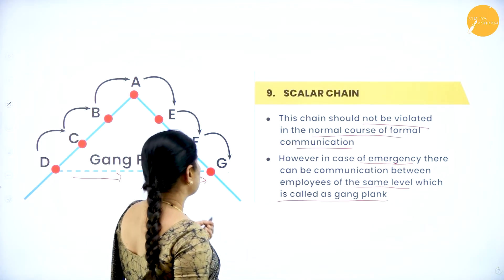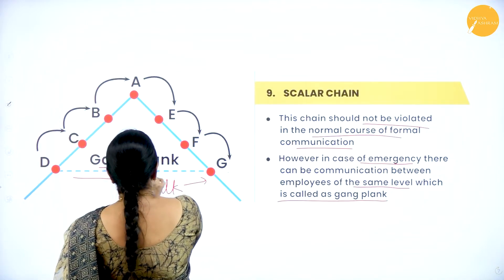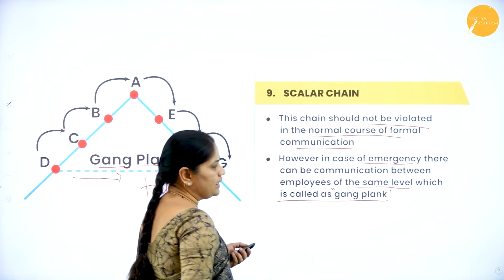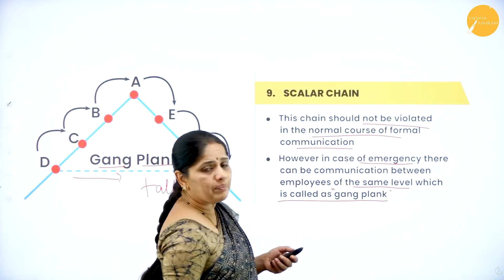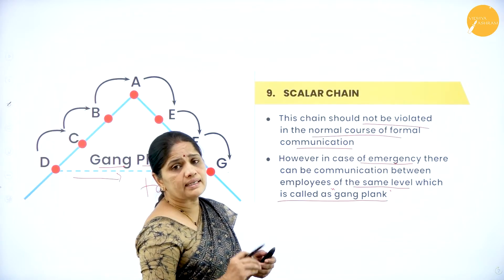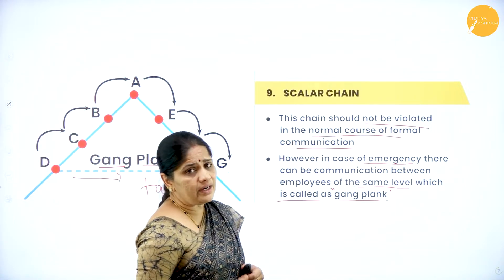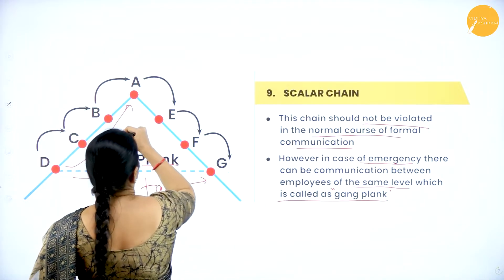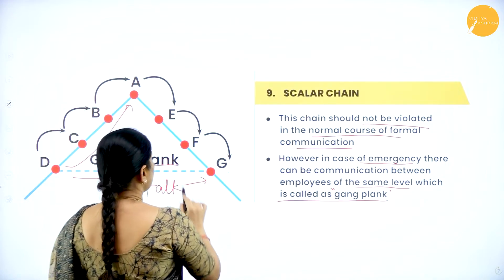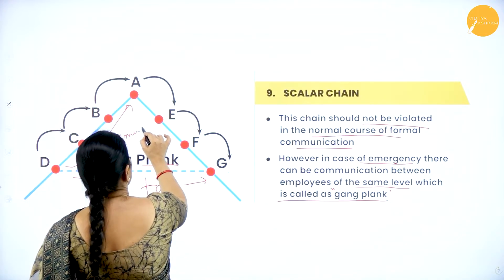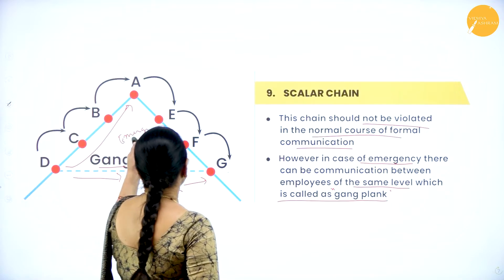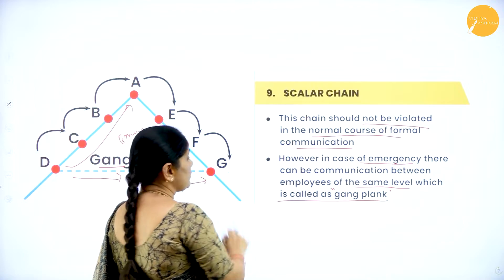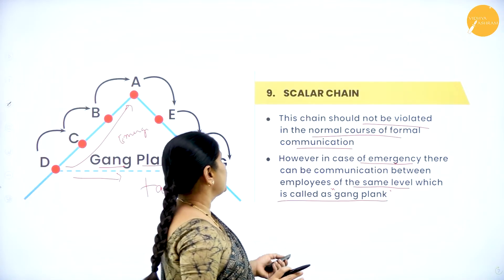This shortcut communication in emergencies is called the gangplank. Through the gangplank, information is conveyed faster. D can also directly contact A, but only in cases of emergencies. Otherwise, the formal route must be followed.